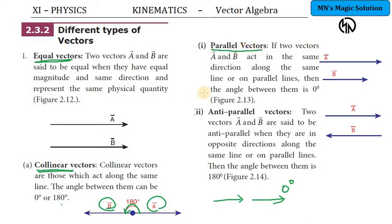Next heading is parallel vectors. As the name implies, two vectors are parallel. The angle between these two parallel vectors is 0 degrees in this case. Anti-parallel vectors means they are parallel but in opposite directions. Then that is anti-parallel vectors. So the angle between these two vectors will be 180 degrees. Either both are parallel or in opposite directions, you can have the angle as 180 degrees.